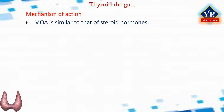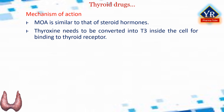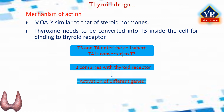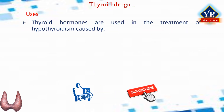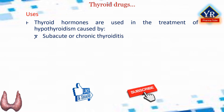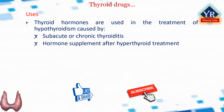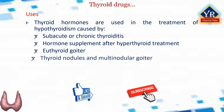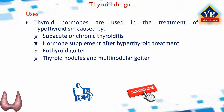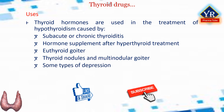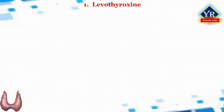Mechanism of action of thyroid hormones is similar to that of steroid hormones. T4 (thyroxine) needs to be converted into T3 inside the cell for binding to the thyroid receptor. Thyroid hormones are used in the treatment or prevention of hypothyroidism caused by subacute or chronic thyroiditis, hormone supplement after hyperthyroid treatment, euthyroid goiter (enlargement of a normal thyroid gland), thyroid nodules and multinodular goiter, some types of depression, and thyroid cancer.